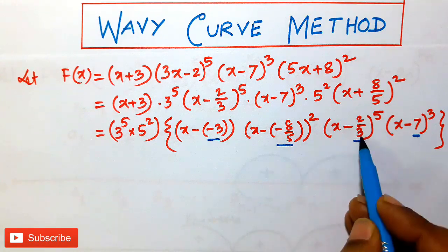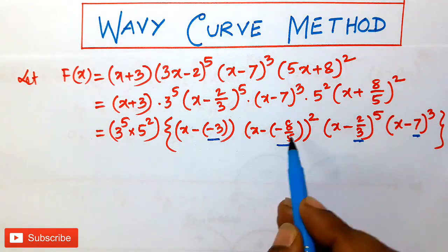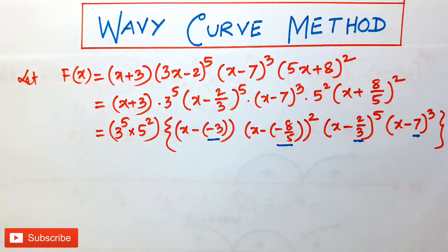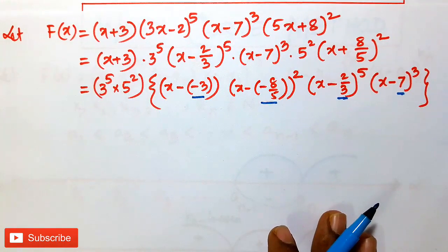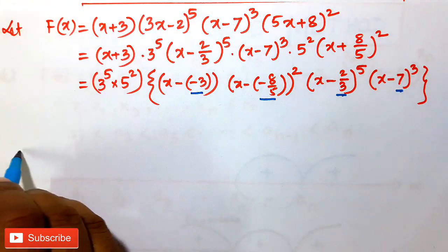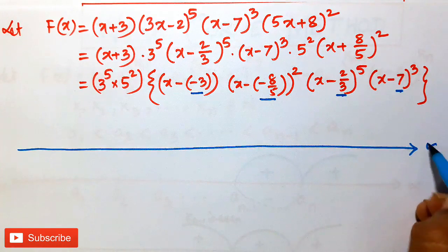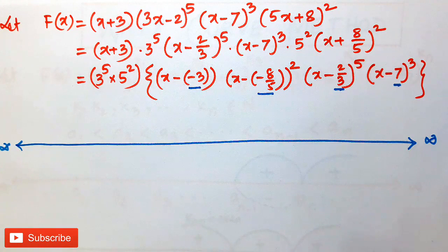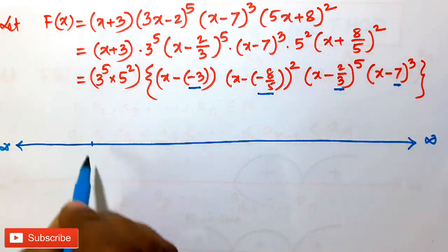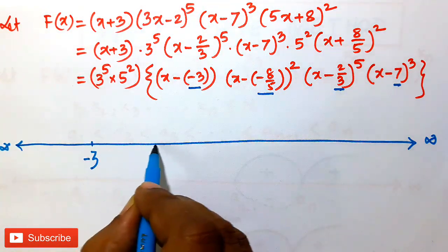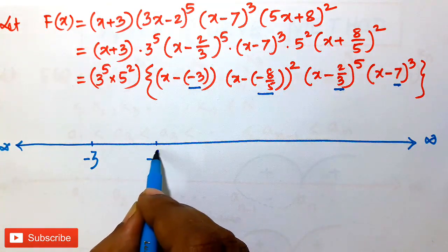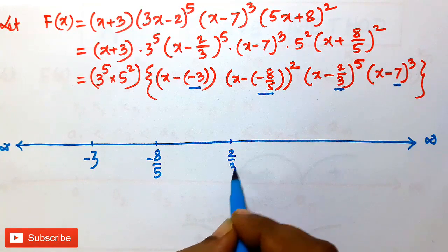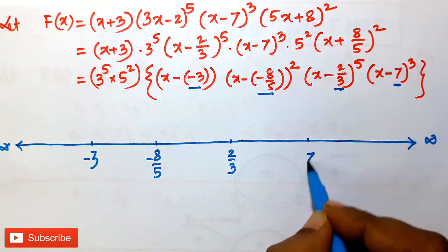These are all in ascending order: −3 < −8/5 < 2/3 < 7. So now we plot all the points on the real axis from minus infinity to plus infinity. The points marked are −3, then −8/5, then 2/3, then 7.